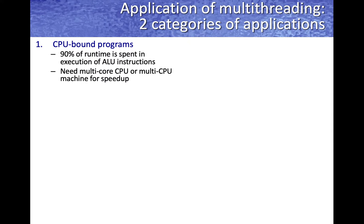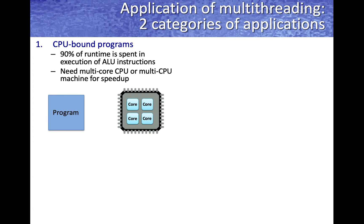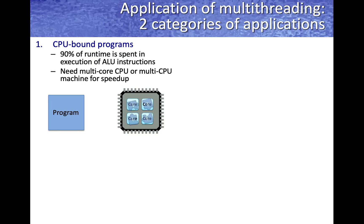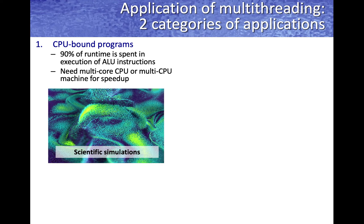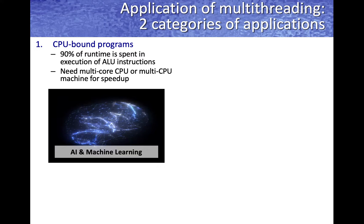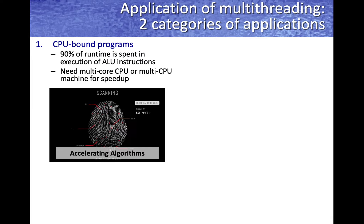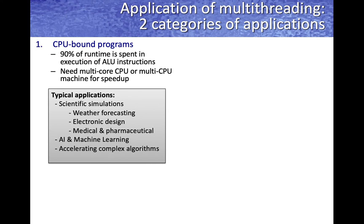There are several categories of applications that can take advantage of multi-threading. CPU-bound programs spend most of their time processing instructions using the ALU. They can be subdivided into independent threads that simultaneously operate on multiple cores. CPU-bound programs are widely used for scientific simulations, AI and machine learning, and accelerating complex algorithms — for example, weather forecasting, medical and pharmaceutical analysis, and machine learning programs.